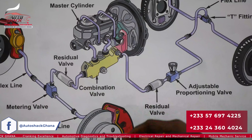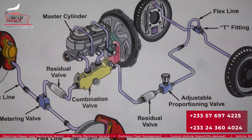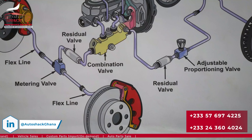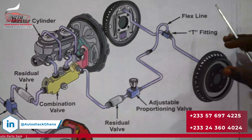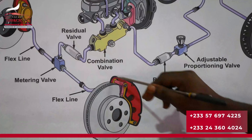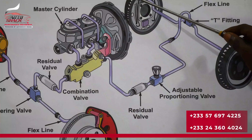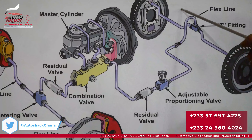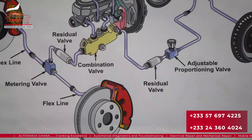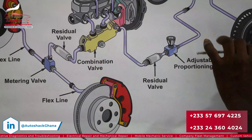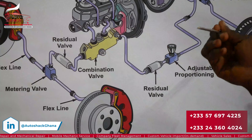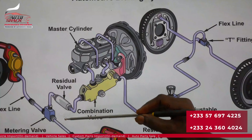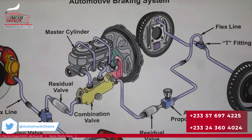The fluid moves from the residual valve into the metering valve. This system is typically used on a disc-and-drum setup. The metering valve holds off the braking effect of the front discs slightly — delaying it to allow the rear drum system to activate first. This is because the drum mechanism is a little slower. If the front and rear activated at the same time, the car would nose-dive, meaning the braking effect would be felt immediately at the front rather than equally front and back. So the metering valve delays front brake pressure slightly, allowing the brake drums to apply first.